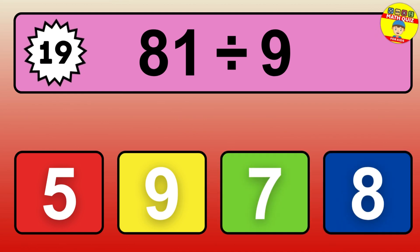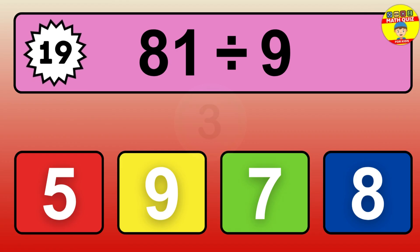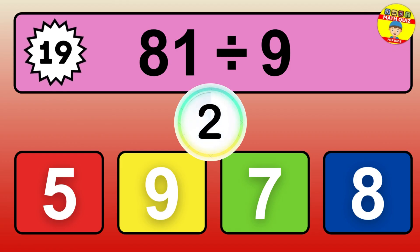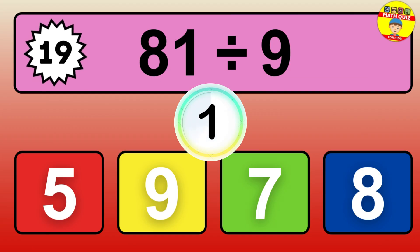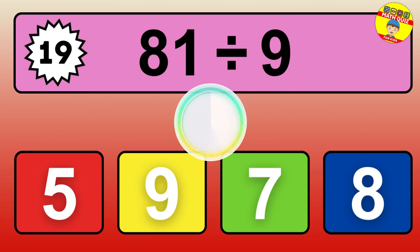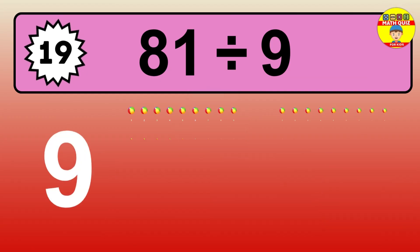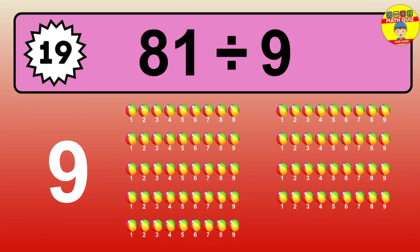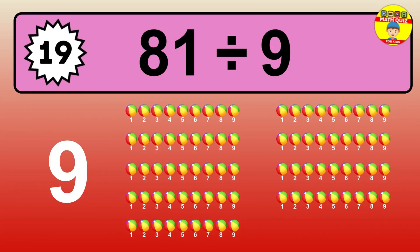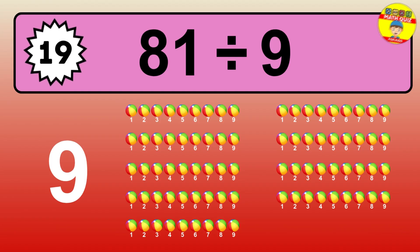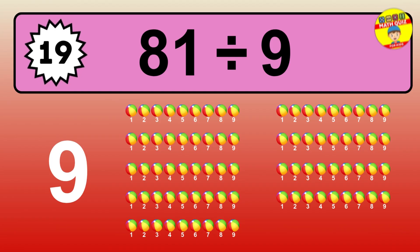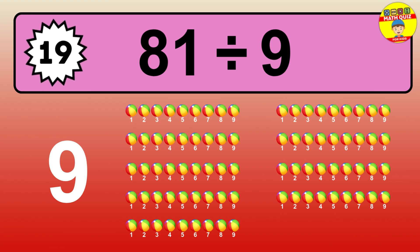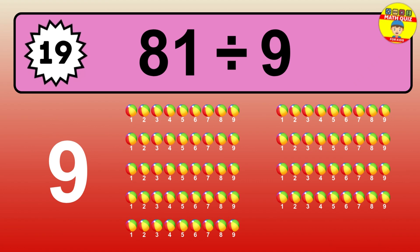63 divided by 7 — time to think. Let's go to the solution. Divide the number 63 by 7. Each group contains 7 units, so dividing 63 by 7 results in 9 equal groups. Thus, the result is 63 divided by 7 equals 9.